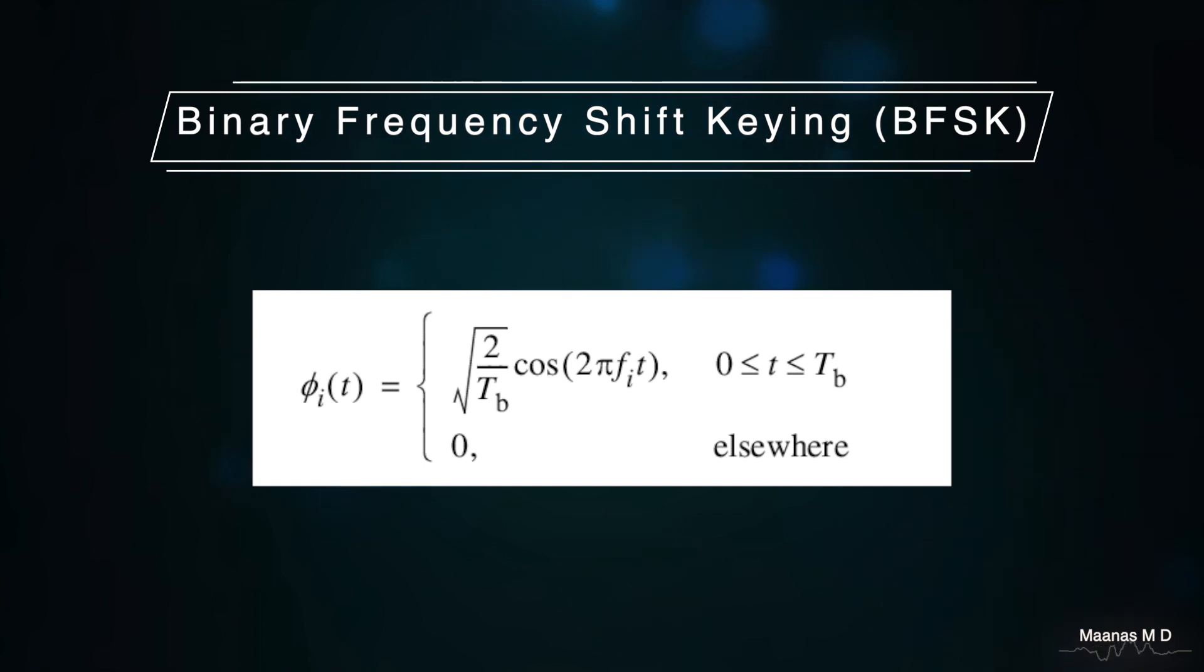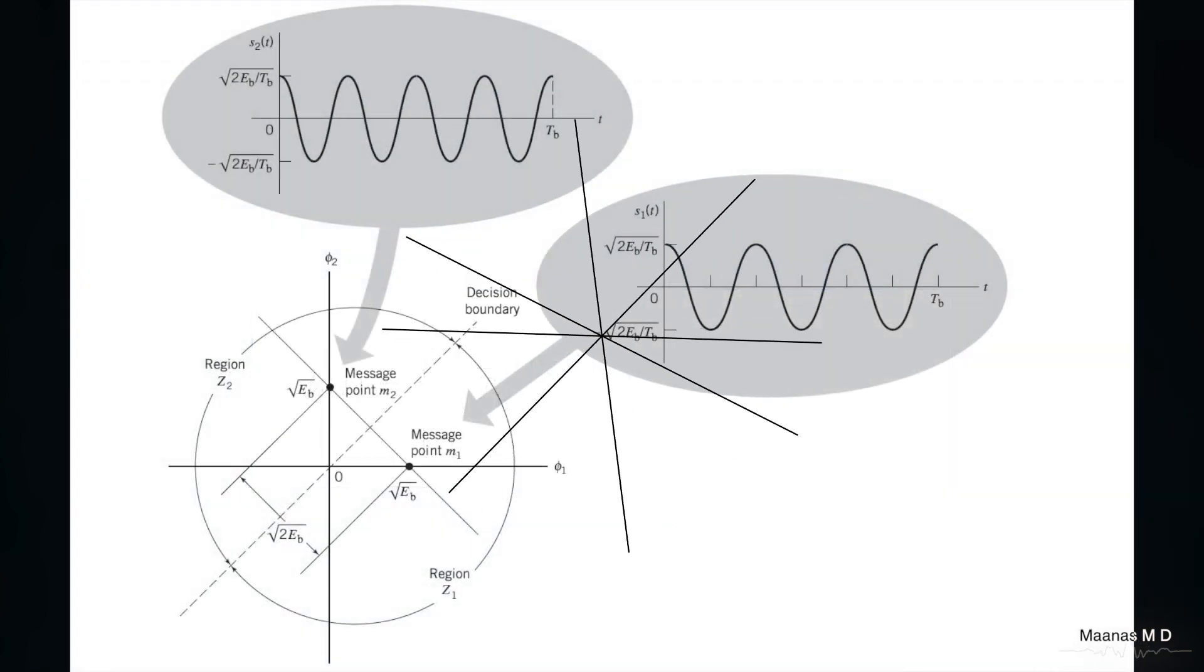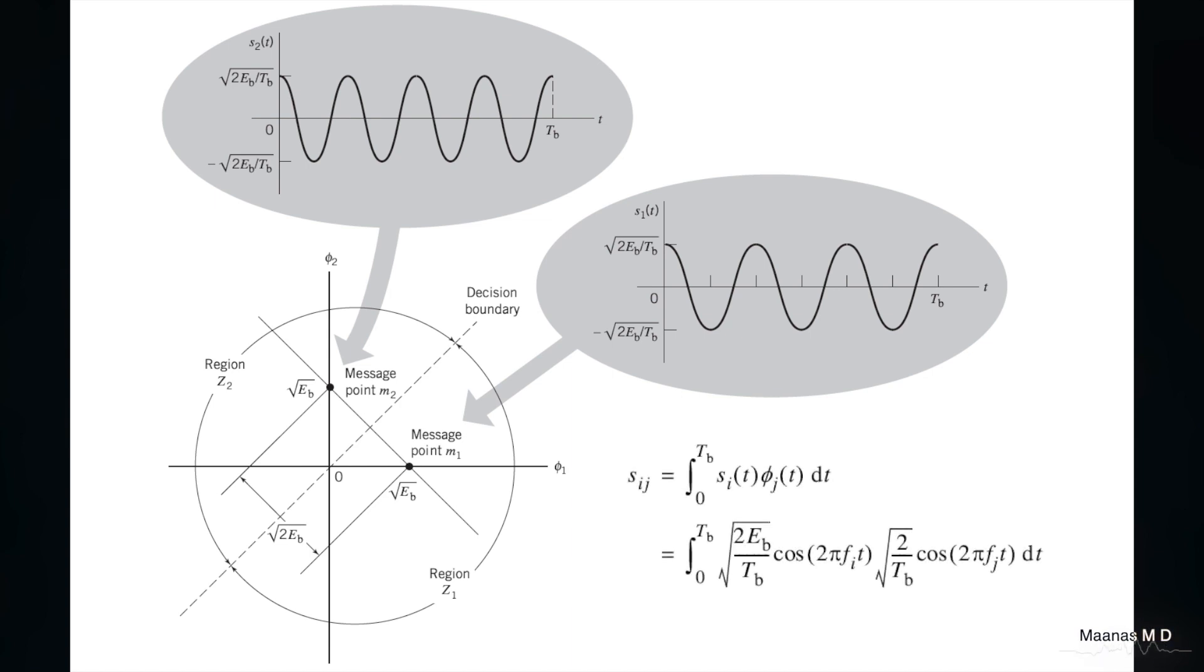Now let's analyze the basis function using the constellation diagram. To find the coefficients for the constellation diagram, we have to multiply the symbol into the basis function. Upon multiplication, we get the symbols as shown in the figure: root of Eb and 0, the other symbol as 0 and root Eb.